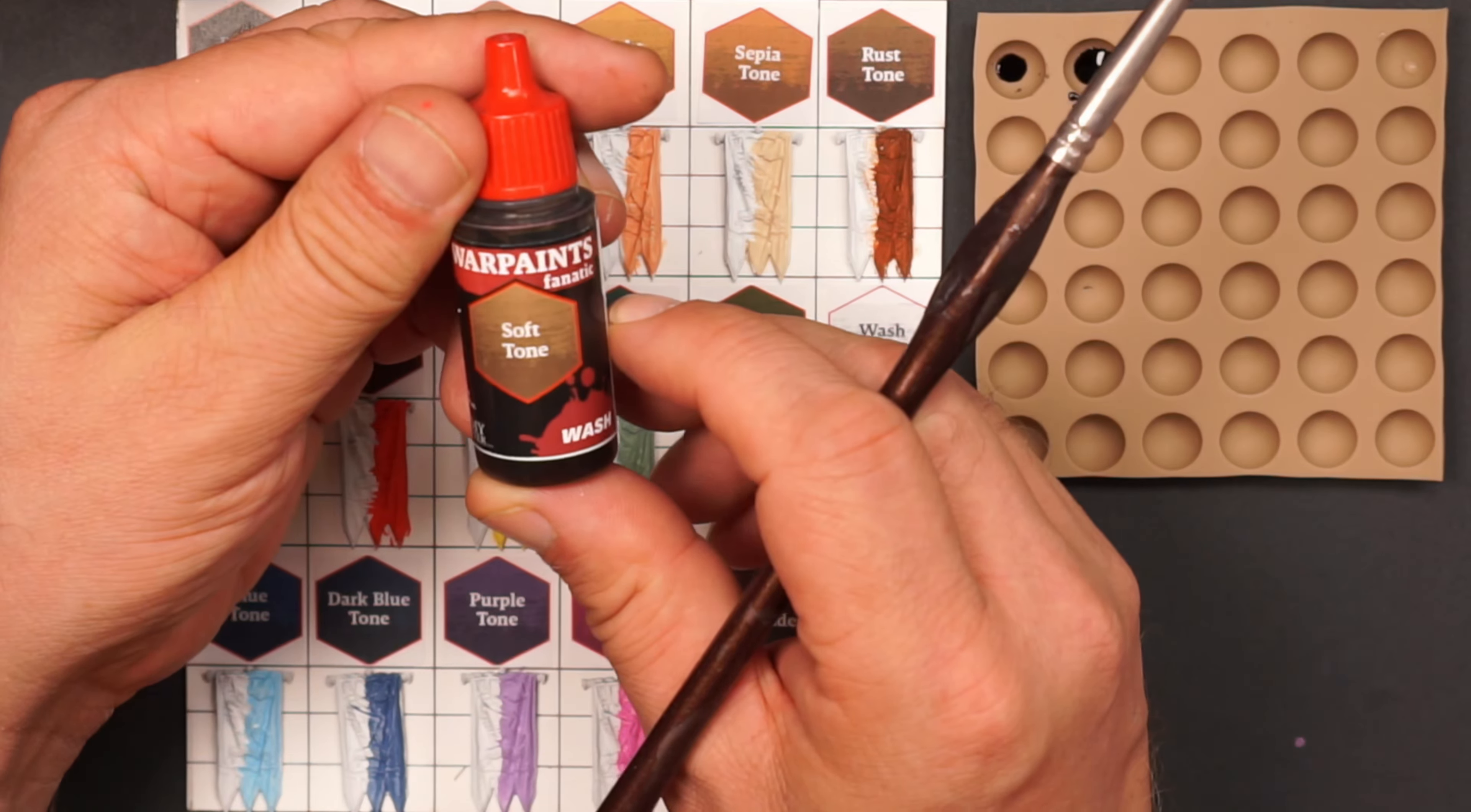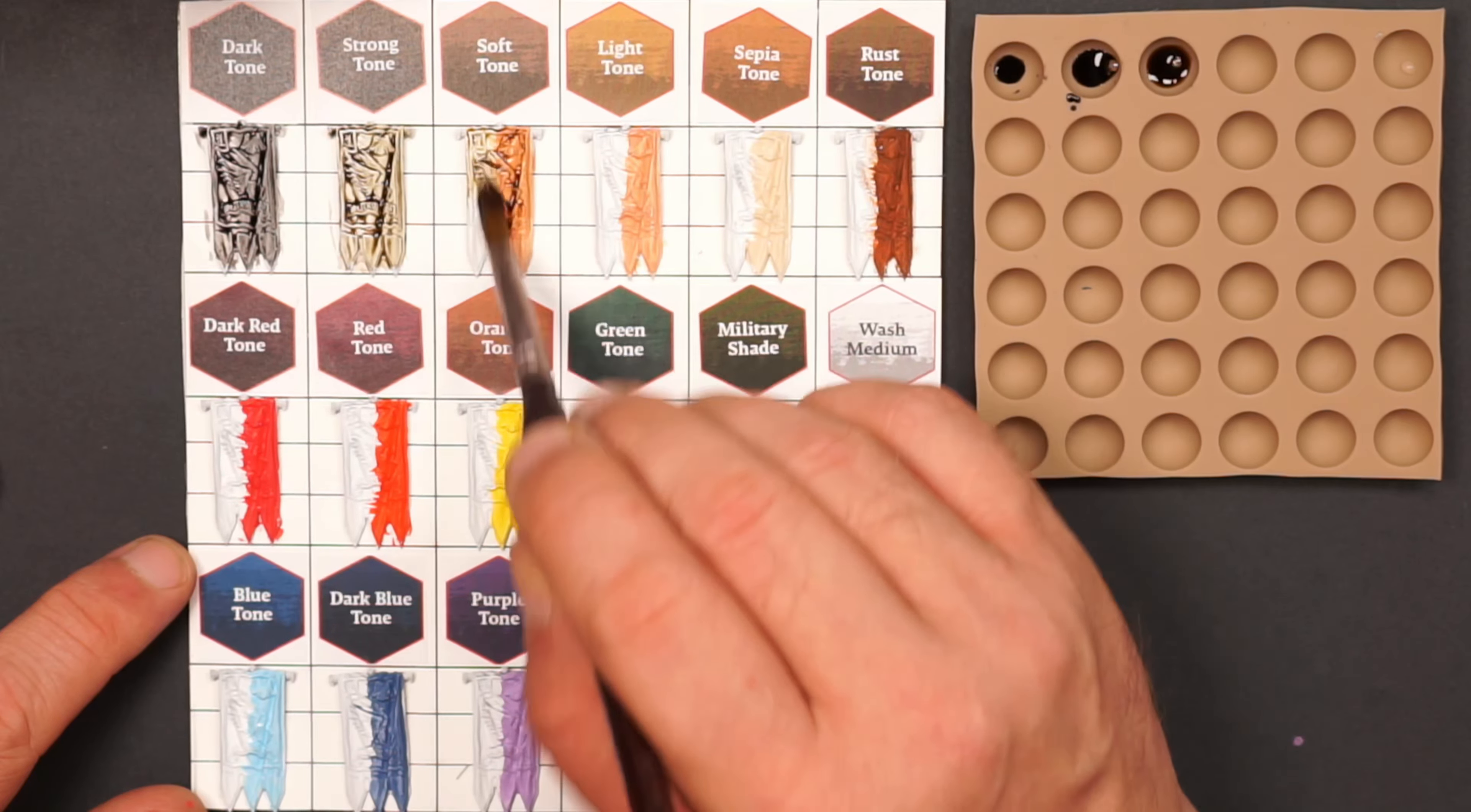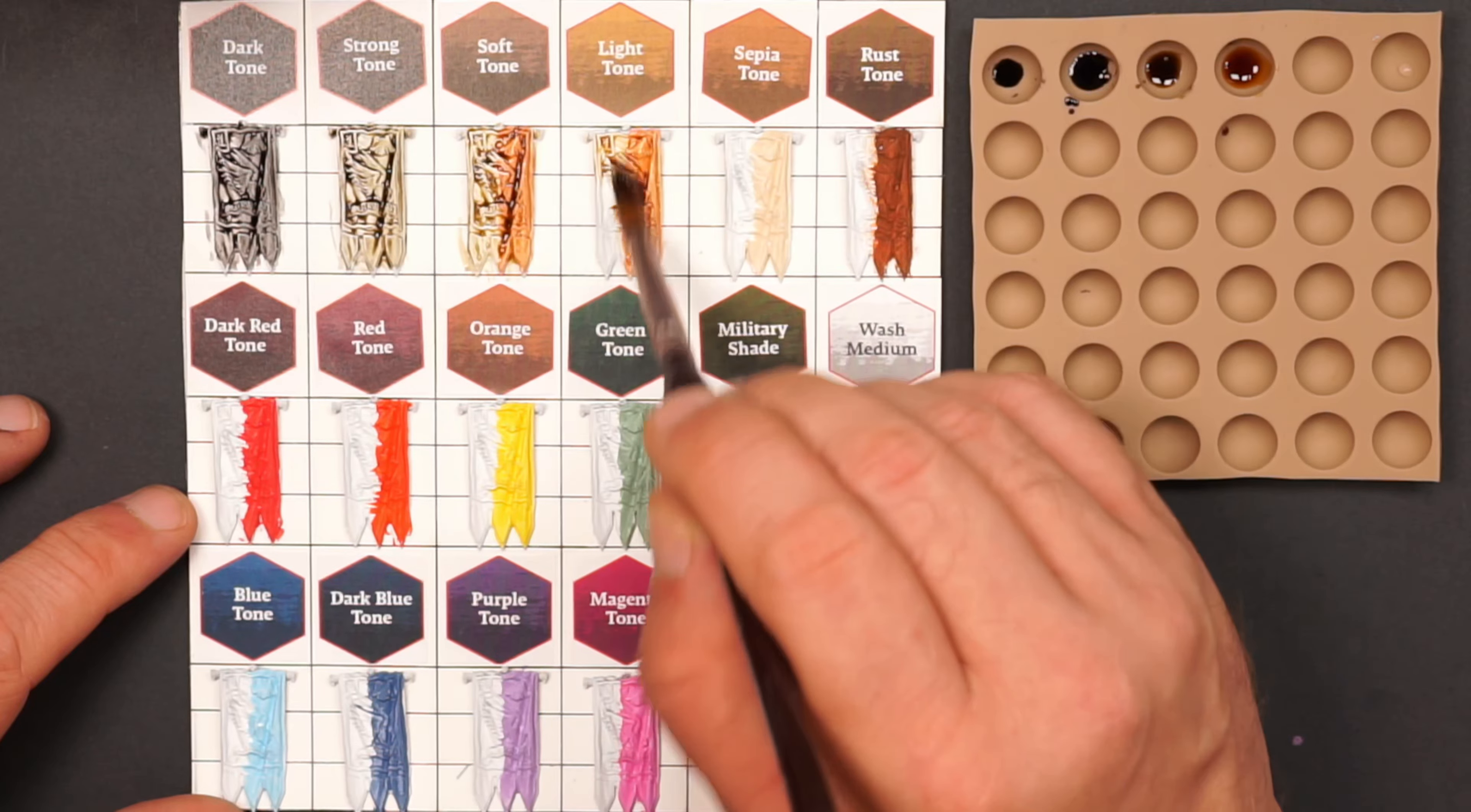The soft tone is a bit brighter color and it has a bit more brown tint to it. And I don't think it works very well on the Barbarian skin color, but let's have a go anyway. And the same goes for the light tone. I think the Barbarian skin is not the best choice for this, but it's a bit brighter brown and it looks great over white and a number of other colors.